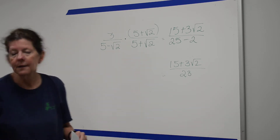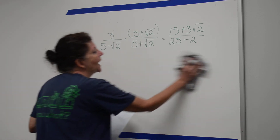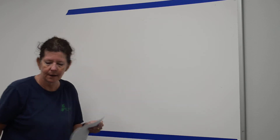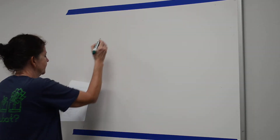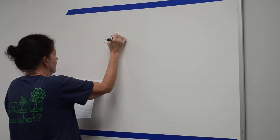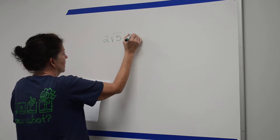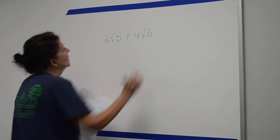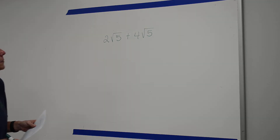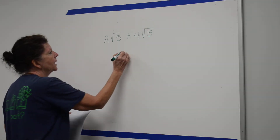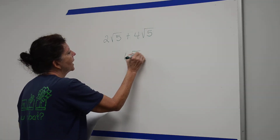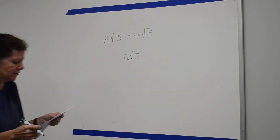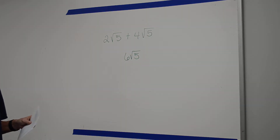Section 11.2 covered adding, subtracting, and multiplying radicals. If the square roots are matching, you almost treat them like variables. For example, combining like radical terms would give 6 on the square root of 5.